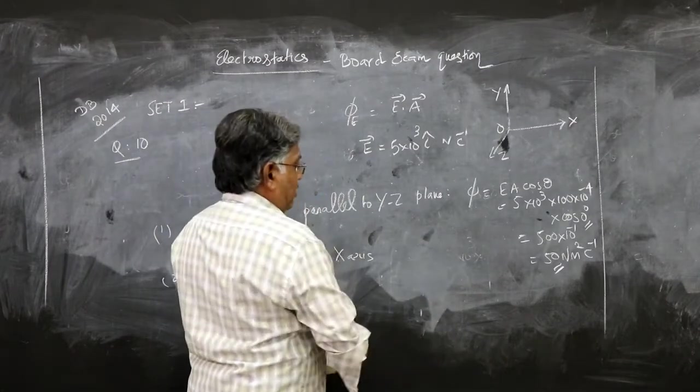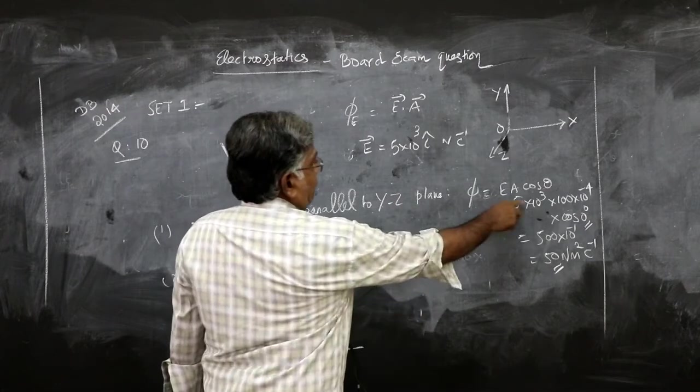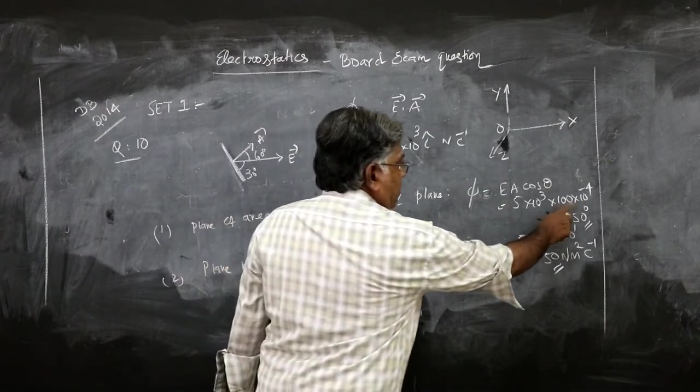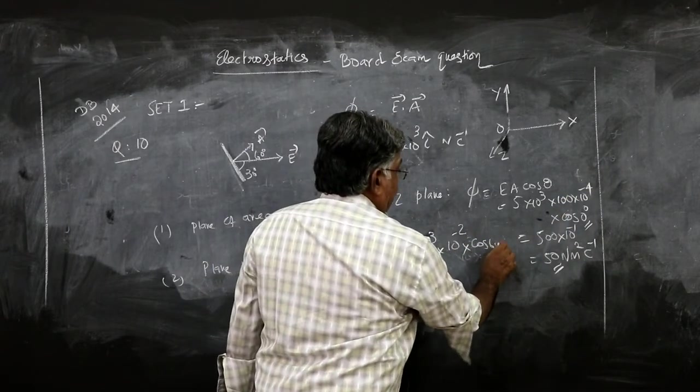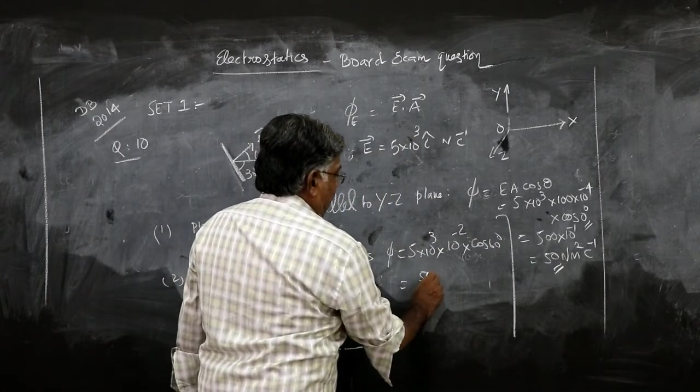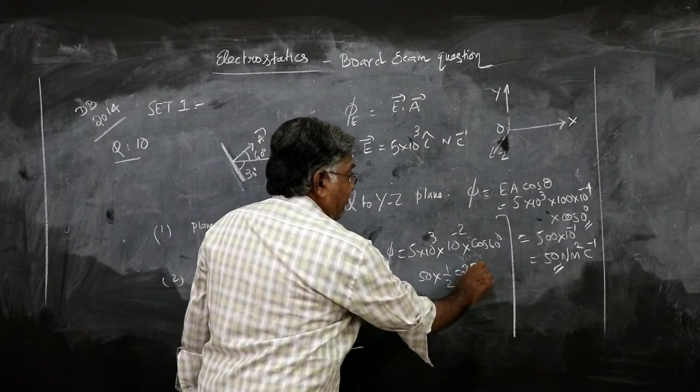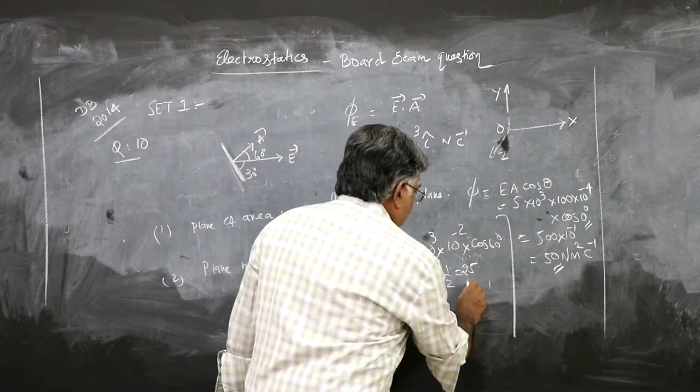φ equals E, which is 5 × 10³, the area 100 × 10⁻⁴, simply 10⁻², cos 60 degrees. So this would be 50, cos 60 will be half, so 25 Newton·meter²/coulomb.